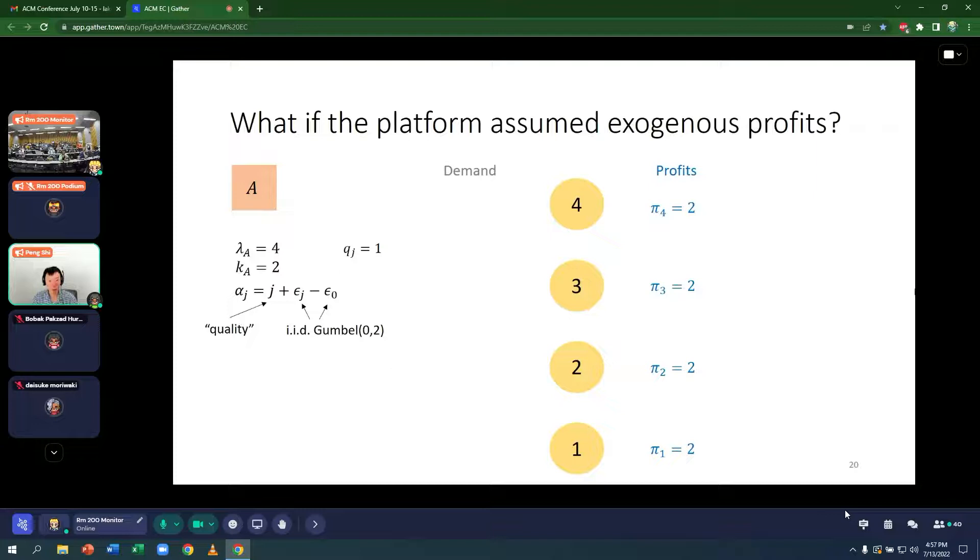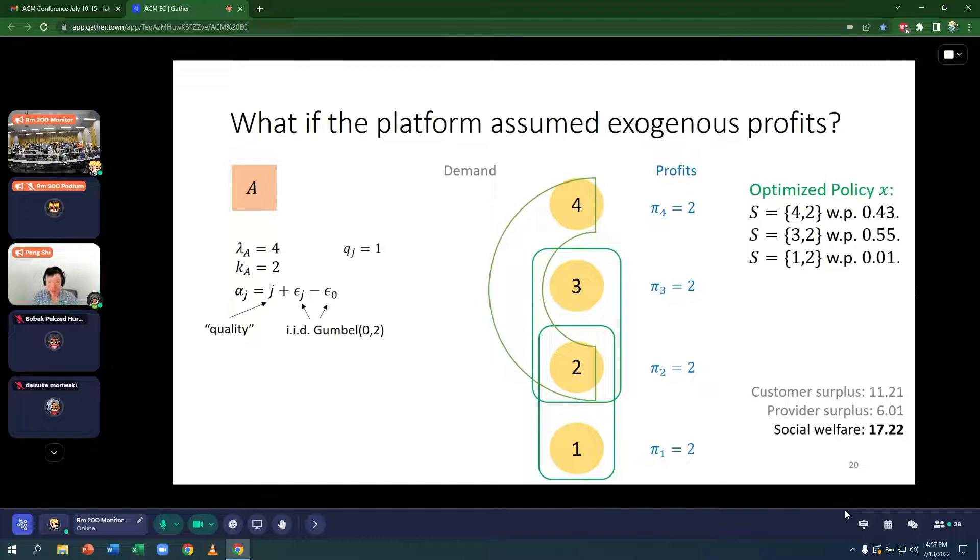So now let me ask the question, what if the platform assumed exogenous profits? So instead of the model in which profits of providers are based on supply and demand, let's say the platform assumed these providers have profit of 2, for example, based on perhaps previous profits. And what happens is that we can write down an optimization problem and this is the optimized policy. We see it's quite complicated. It recommends the set 4,2 with probability 43%, the set 3,2 with probability 55% and so on.